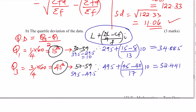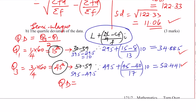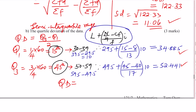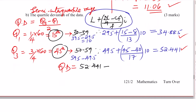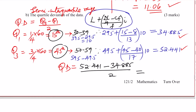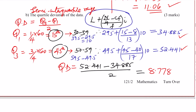Now we have Q1 and Q3. Quartile deviation, also referred to as semi-interquartile range, is therefore: QD = (Q3 minus Q1) divided by 2 = (52.441 minus 34.885) divided by 2, which gives 8.778. And that is how you solve that question. Thank you.